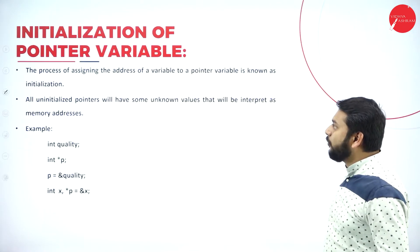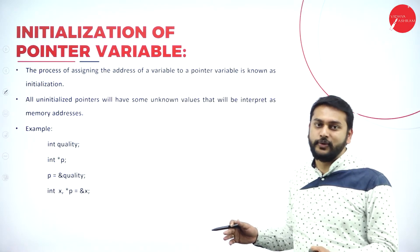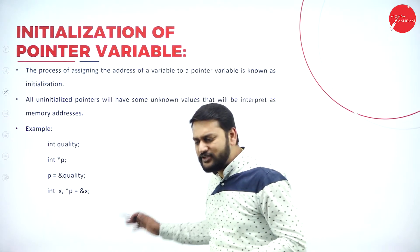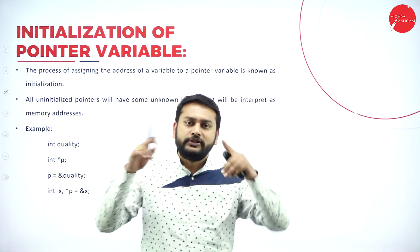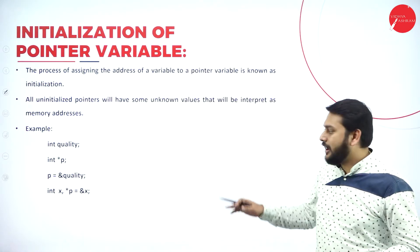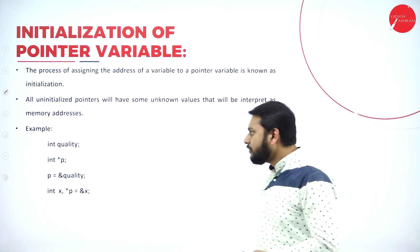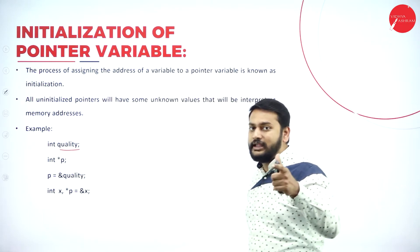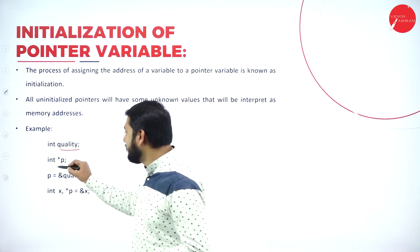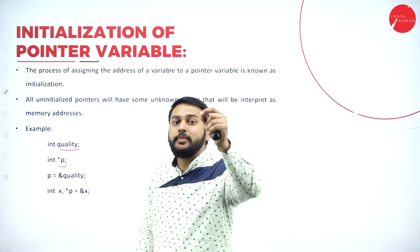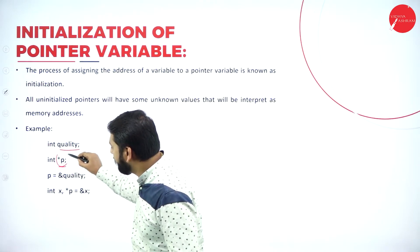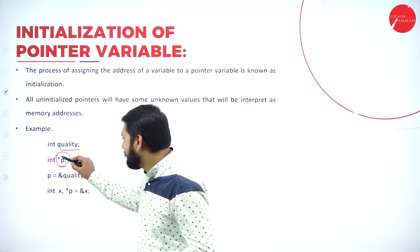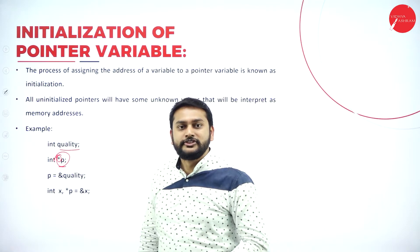Moving forward, how do I initialize a pointer variable? I have a normal integer variable called quantity. Then I am creating another variable — please observe: is this a normal variable? No, it is not, because I have a star before the variable name.